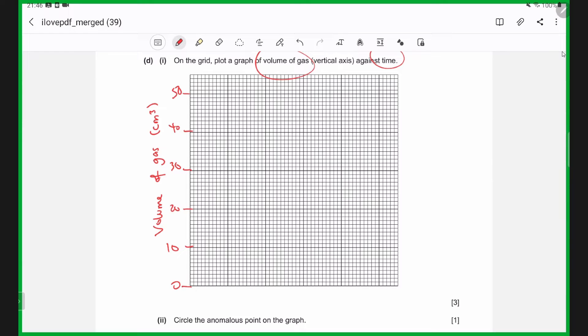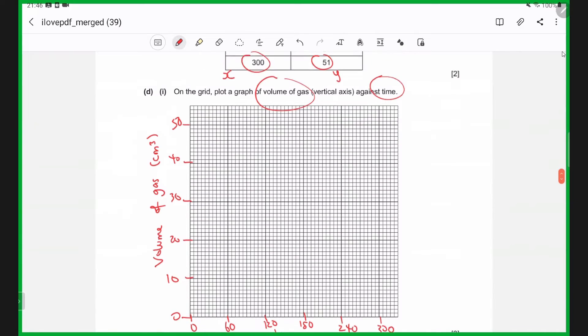Now, for my x-axis, I have the time in seconds goes up to 300, and you can see here I have 1, 2, 3, 4, 5 increments. So 300 divided by 5 is 60. So I'm going up in 60s: 60, 120, 180, 240, and 300.